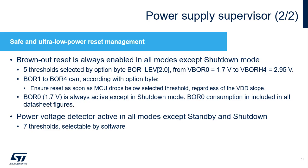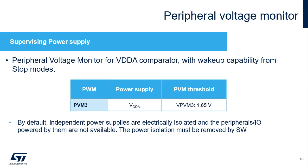A power voltage detector can generate an interrupt when VDD crosses the selected threshold. The PVD can be enabled in all modes except standby and shutdown modes. Seven thresholds can be selected by software, and an external pin can be used to compare voltages. The BOR consumption with the 1.7 volt threshold is included in the datasheet. The STM32WL5 embeds one peripheral voltage monitor, PVM3, to detect if the VDDA supply is present or not. This comparator has wake-up from stop-mode capability. PVM3 compares the VDDA voltage with the 1.65 volt threshold, intended for the comparators, ADC, and DAC. PVM1, PVM2, and PVM4 are not present in STM32WL5.